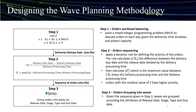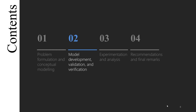The priority index Z is calculated as the maximum value between the critical ratio times the delivery processing time and the delivery processing time itself. Orders with the smallest value of Z have higher priority and should be waved first. In the last step, we group orders into waves according to attributes of release date, stage, type, and due date. This process has been implemented in Simio and runs at the beginning of each simulation to automatically generate waves. Building, validating, and verifying are critical steps to guarantee that the simulation model represents the real system with the right level of detail.